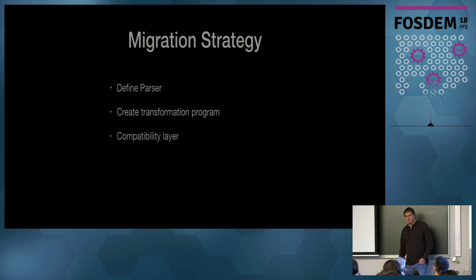So there's many ways to migrate code, and I have, this is kind of my strategy. So first thing, you have to define the parser for whatever language you're going to migrate from. A lot of times we already have the parser, but sometimes you don't. So you define the parser, the next thing is you create your transformation program. So that's going to basically run and convert all your code to the new language. And one of the final things is a lot of times we'll have to have a compatibility layer, because there's features in the old language that aren't available in the new language, and we'll need to support those.